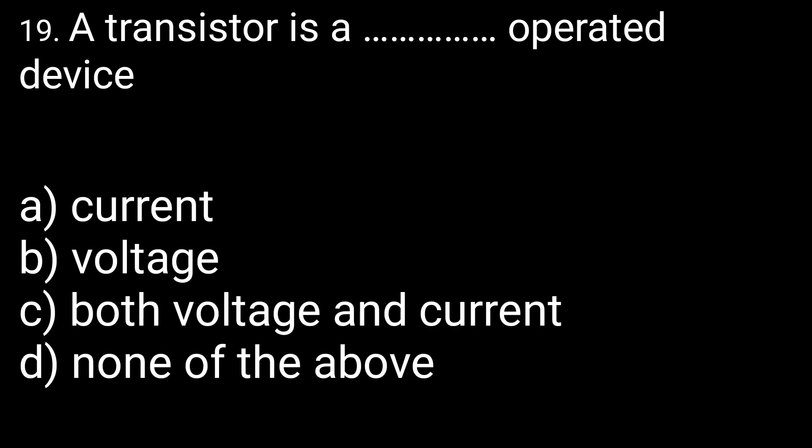Next question: a transistor is a current operated device, voltage operated device, both, or none? The transistor is a current operated device — not a voltage operated device. This is an important question that students often get confused about.